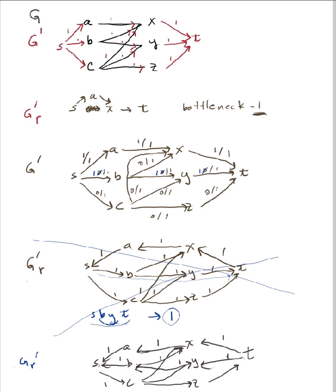Now I need my augmenting path. I can take S then C. I can't choose X because I can't get to T. C to Y — again, I can't choose Y because I can't get to T. C to Z, I could do that one, and then Z to T. So there's my augmenting path: S, C, Z, T. The bottleneck is the min of 1 and 1 and 1, giving a bottleneck of 1. So S to C: 0 plus 1 gives me 1. C to Z: 0 plus 1 gives me 1. And Z to T: 0 plus 1 gives me 1.